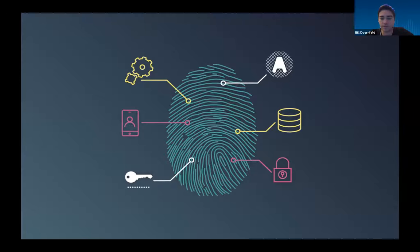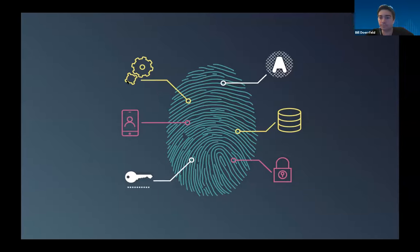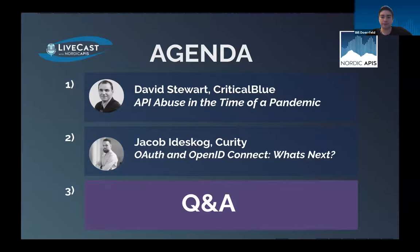Who is the requesting party? Are they allowed to access this data? What proof can they offer that they are who they say they are? Many in the API space argue that a greater emphasis on how we handle the identity of the client could work to fix a lot of these threats.